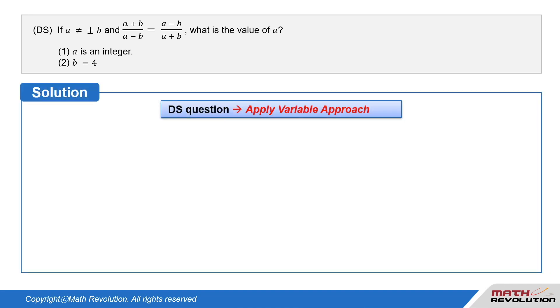Now, we will solve this DS question using the variable approach. Let's follow the first step of the variable approach. Modify the original condition and the question to suit the type of information given in the conditions. This is a priority and the most important step. The first step alone gives us a 30% chance of answering the question correctly.